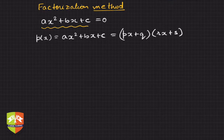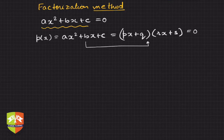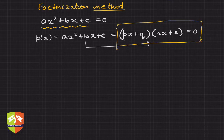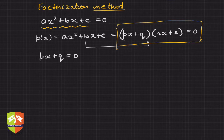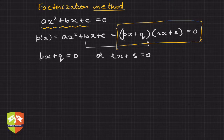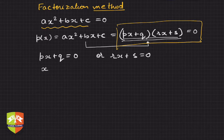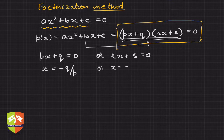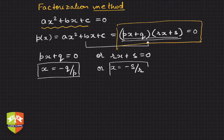A quadratic polynomial can have at most two linear factors. Now if we equate it to zero, if the product of two linear factors is zero, that is only possible when either of them is zero. So either px + q = 0 or rx + s = 0. If either of these conditions is fulfilled, then x = −q/p will be one solution or x = −s/r. Hence these two become the solutions.